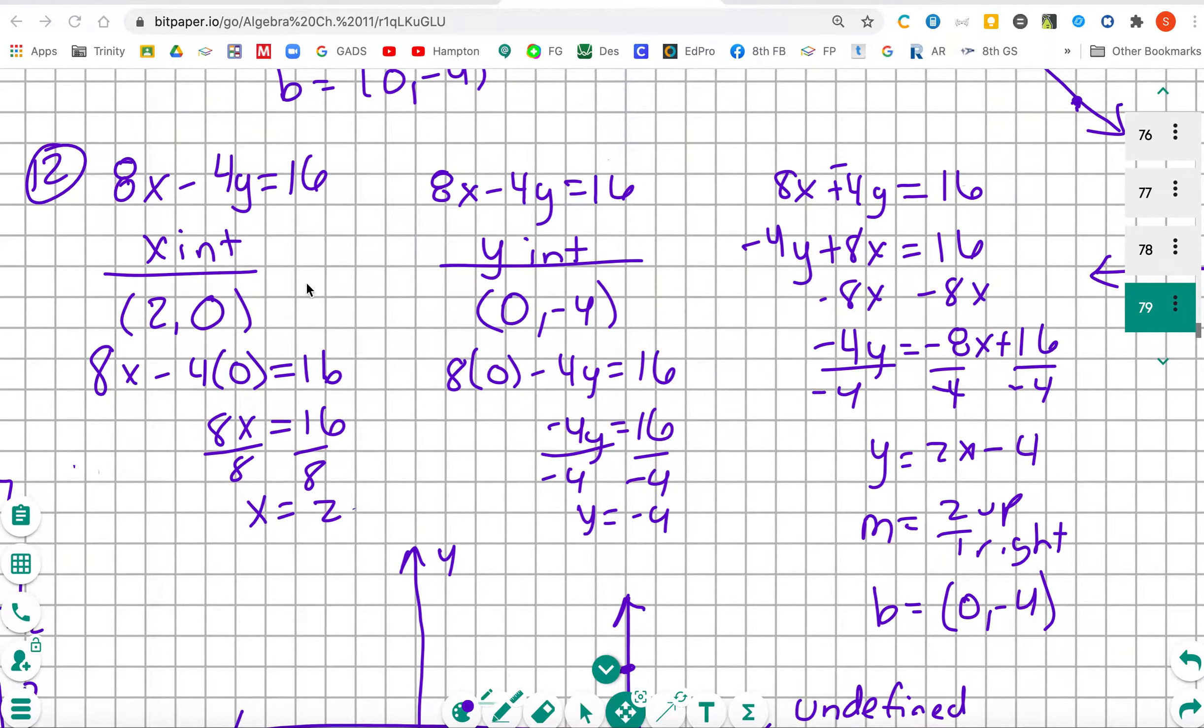If we're going to find the x-intercept, we know that the y value is 0. So because we know the y value is 0, we'll put that into our ordered pair. We'll plug in the 0 for y. 8x minus 4 times 0 is equal to 16.